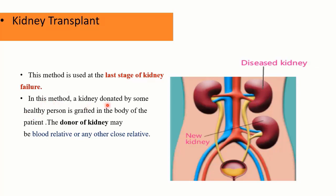In this method, a kidney donated by a healthy person is grafted into the body of the patient. Kidney transplantation means placing a healthy kidney into the body where it can perform all functions that a failing kidney cannot. A new kidney is surgically grafted in the pelvic region where it is connected with nearby blood vessels and also connected with the bladder.